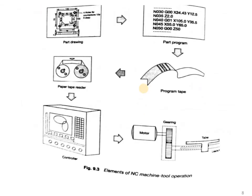This is an overview of numerical control. We start with a basic drawing, from which we create an NC part program. From that program, we create a punch tape as input for the tape reader. The paper tape reader transfers the signal to the machine controller, which then sends the signal to the actual manufacturing machine. This is the overview of the NC machine tool operation.